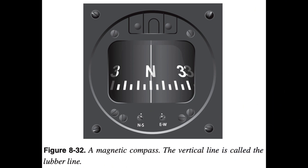One of the oldest and simplest instruments for indicating direction is the magnetic compass. It is also one of the basic instruments required by Title 14 of the Code of Federal Regulations (14 CFR) Part 91 for both VFR and IFR flight. A magnet is a piece of material, usually a metal containing iron, that attracts and holds lines of magnetic flux. Regardless of size, every magnet has two poles — north and south. When one magnet is placed in the field of another, unlike poles attract each other and like poles repel. An aircraft magnetic compass has two small magnets attached to a metal float sealed inside a bowl of clear compass fluid similar to kerosene.